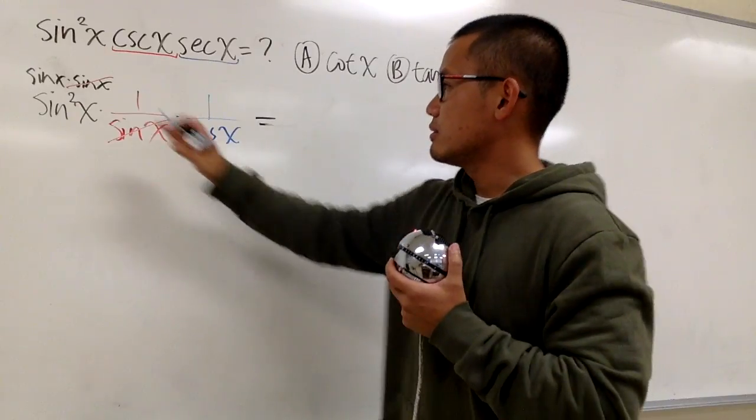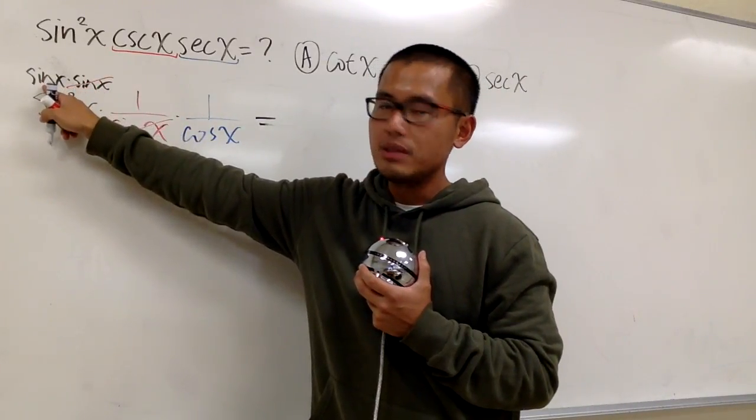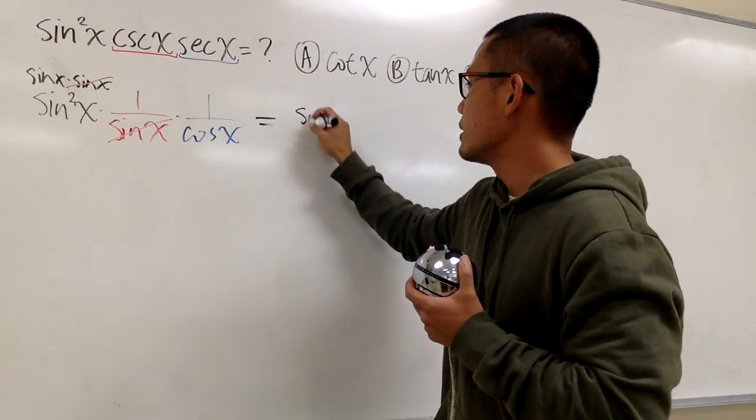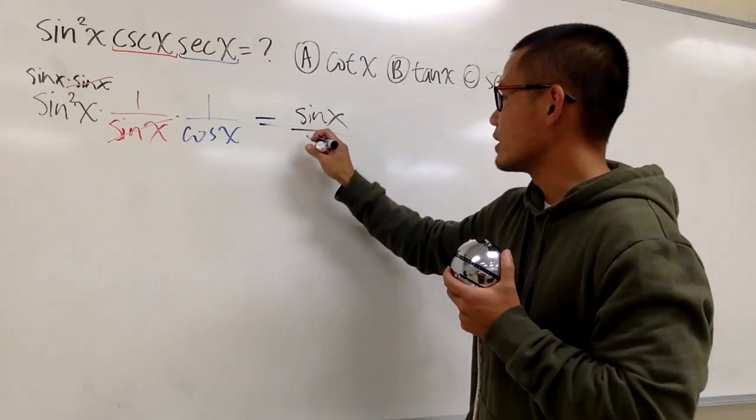All together, we will see that sine x on the top, times 1 times 1, just sine x, over cosine x on the bottom.